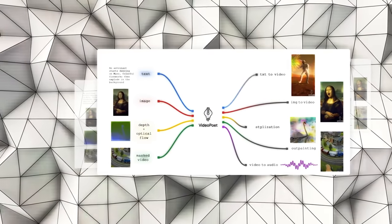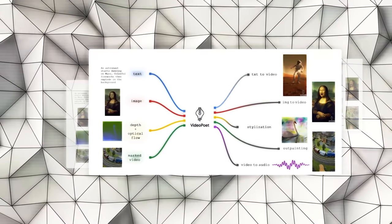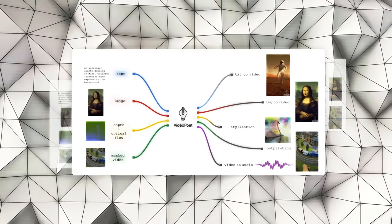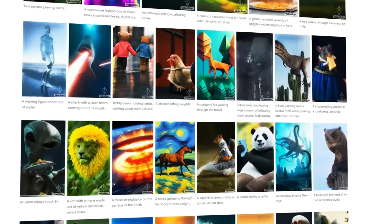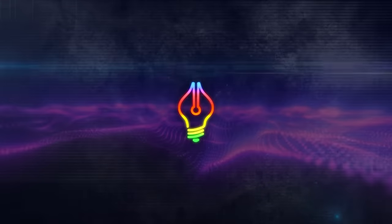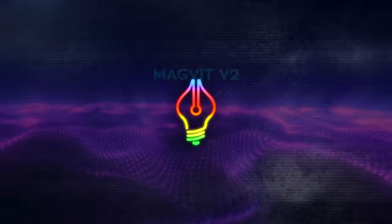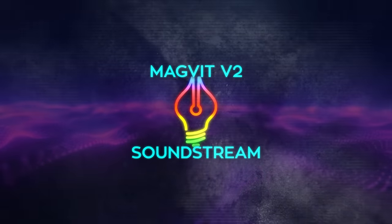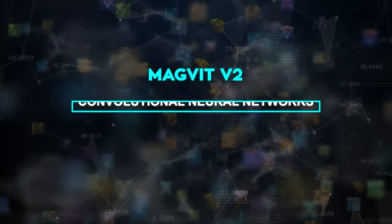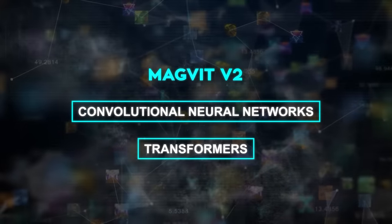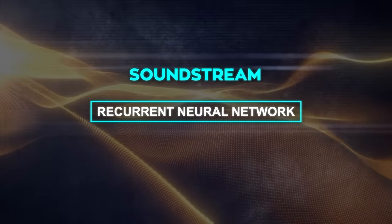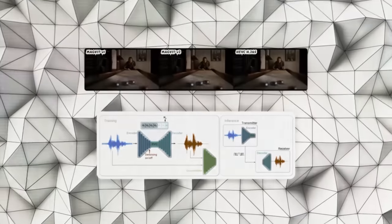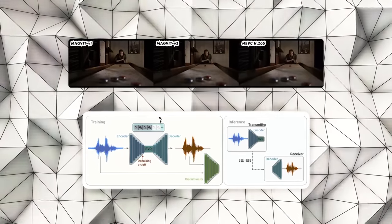VideoPoet can take various inputs such as text, images, or other videos, convert them into multimedia tokens, and then produce a video by generating and assembling these tokens in a logical sequence. The tool uses two state-of-the-art tokenizers: MAGVIT V2, which uses convolutional neural networks and transformers, and SoundStream, which employs a recurrent neural network and a quantization module. These tokenizers efficiently handle complex multimedia content.